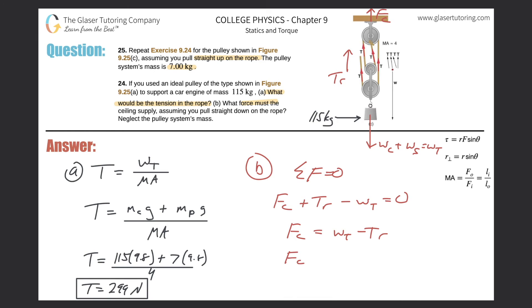So the force of the ceiling will be, what's the total weight? We can add up the two masses, 115 plus 7, multiply that by 9.8. Subtract now out the tension in the rope that we found, so that's 299. Force of the ceiling should equal, let's calculate. So we got 115 plus 7, times 9.8, minus 299. And there we go. So we get a value of about, sorry, I was looking at this number before. We get a number of about 897, 897 Newtons.